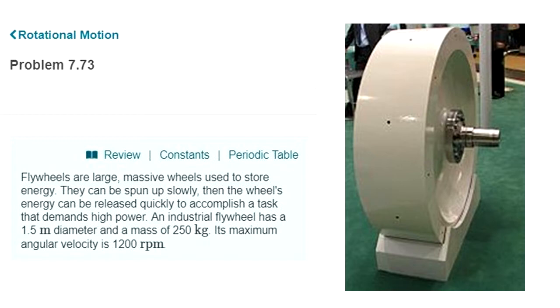An industrial flywheel has a 1.5 meter diameter and a mass of 250 kilograms. Its maximum angular velocity is 1200 revolutions per minute.